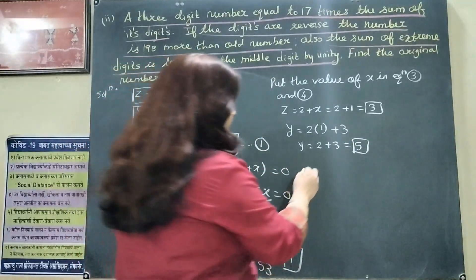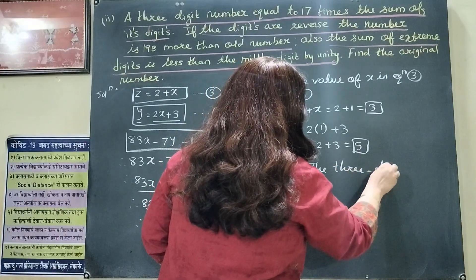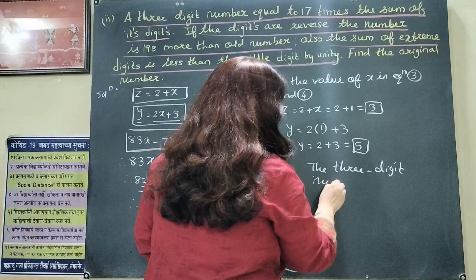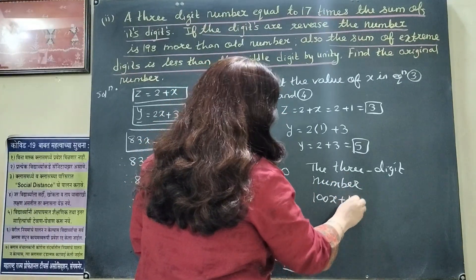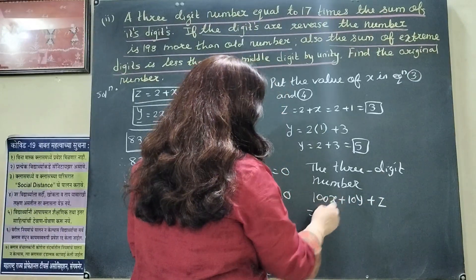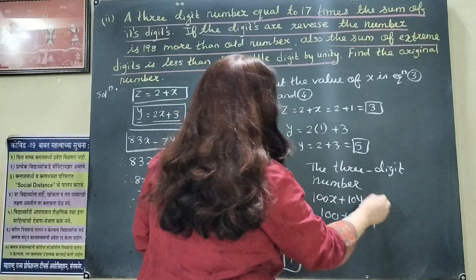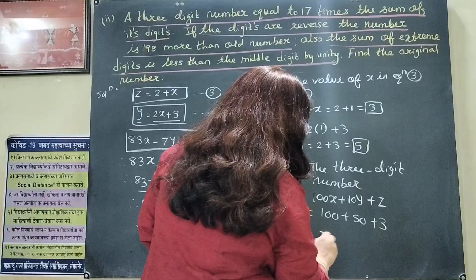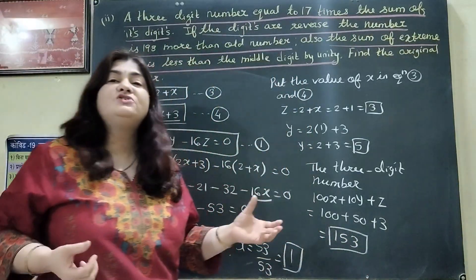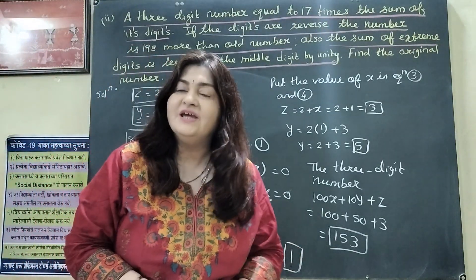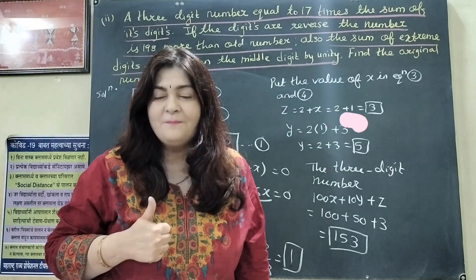The 3-digit number is 100x plus 10y plus z. So 100 into 1 is 100, 10 into 5 is 50, and z is 3. Therefore the 3-digit number is 153. If you liked today's teaching, please like it, share it, and subscribe. Thank you!